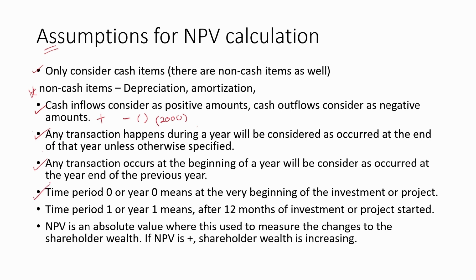Time period 0, or year 0, means at the very beginning of the investment or project. Students often get confused by this. Year 0 means right now — the very beginning of the investment. Time period 1, or year 1, means after 12 months of the project have been completed. After completing 12 months, we consider that as the end of year 1.